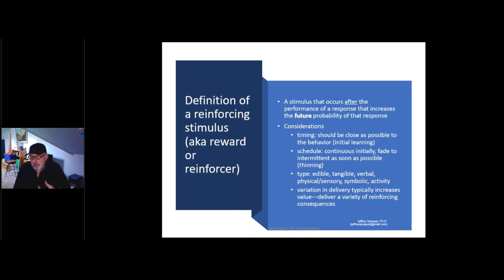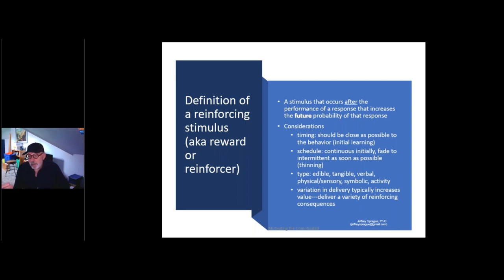There are different types of rewards: edibles — there's controversy about giving students edibles, but I like food — tangibles such as tokens, toys, possessions, verbal things like praise, physical or sensory stimulation. You may observe that more commonly in students with autism or other developmental disabilities: self-stimulation, finger flipping, repetitive verbalizations, some people even hit their head, play with their hair. Another source of reward is access to a fun activity. So maybe you do this now — if you're restricting access to devices until your child gets their homework done, then the access to the device is the reward.